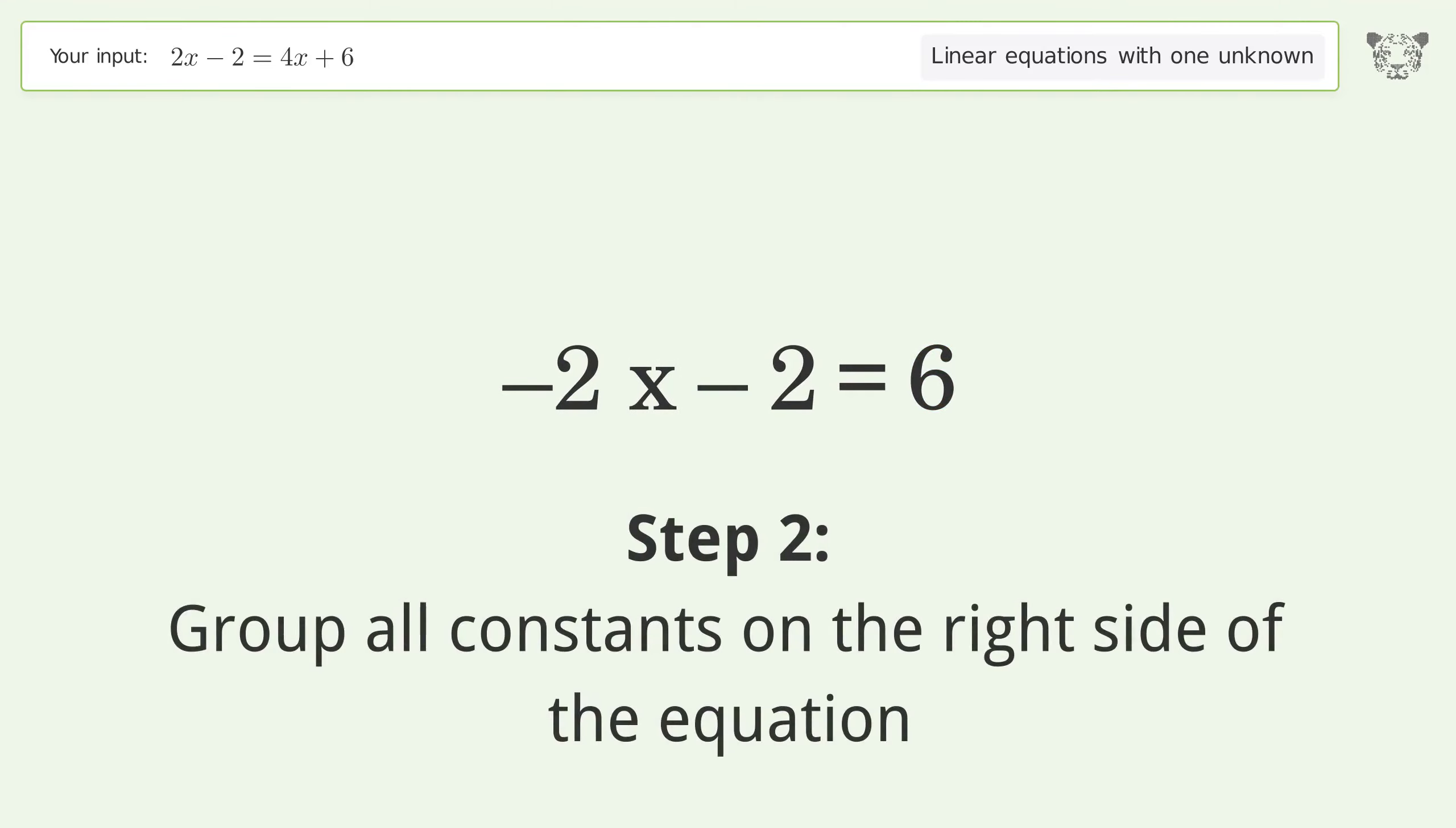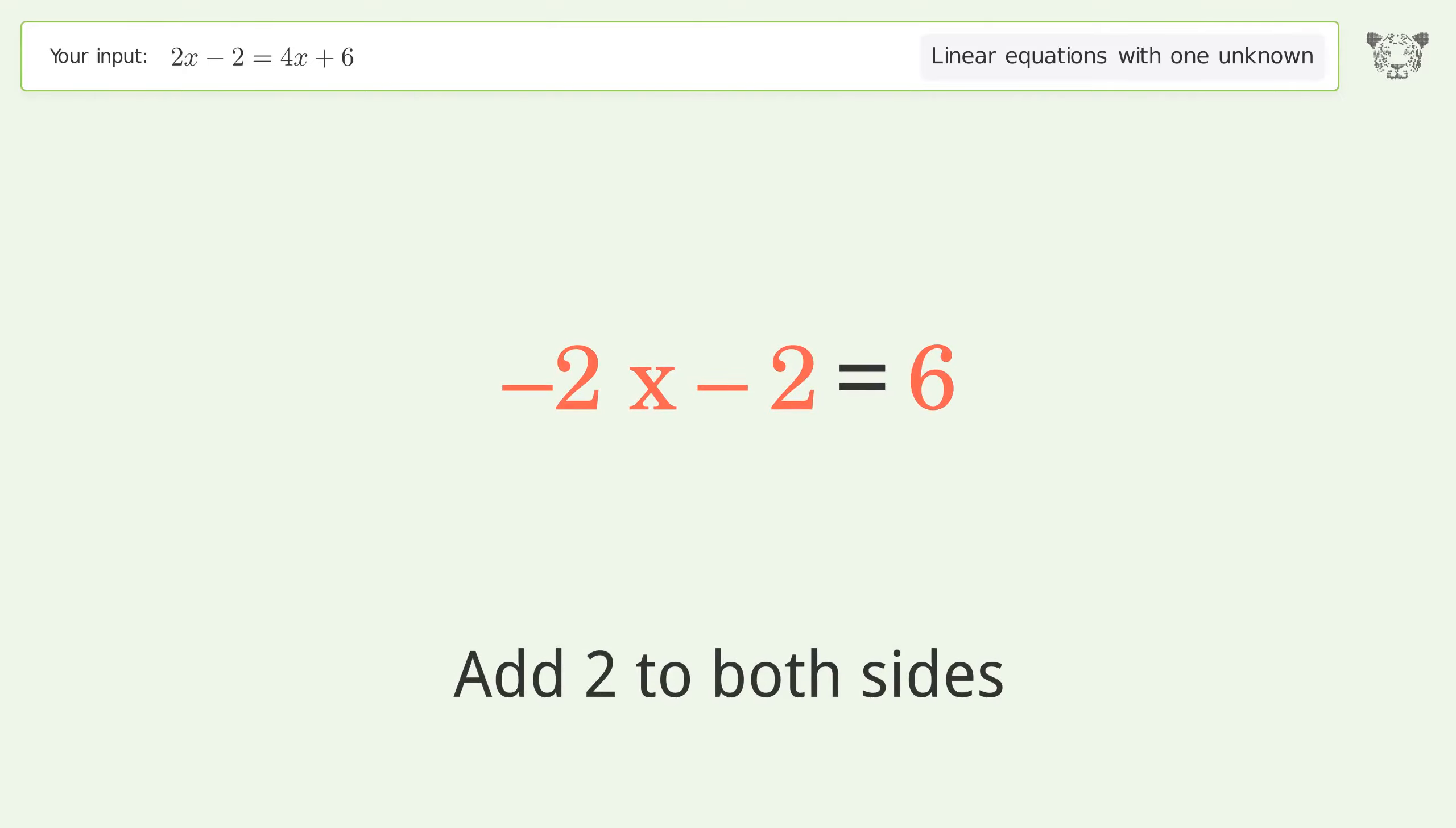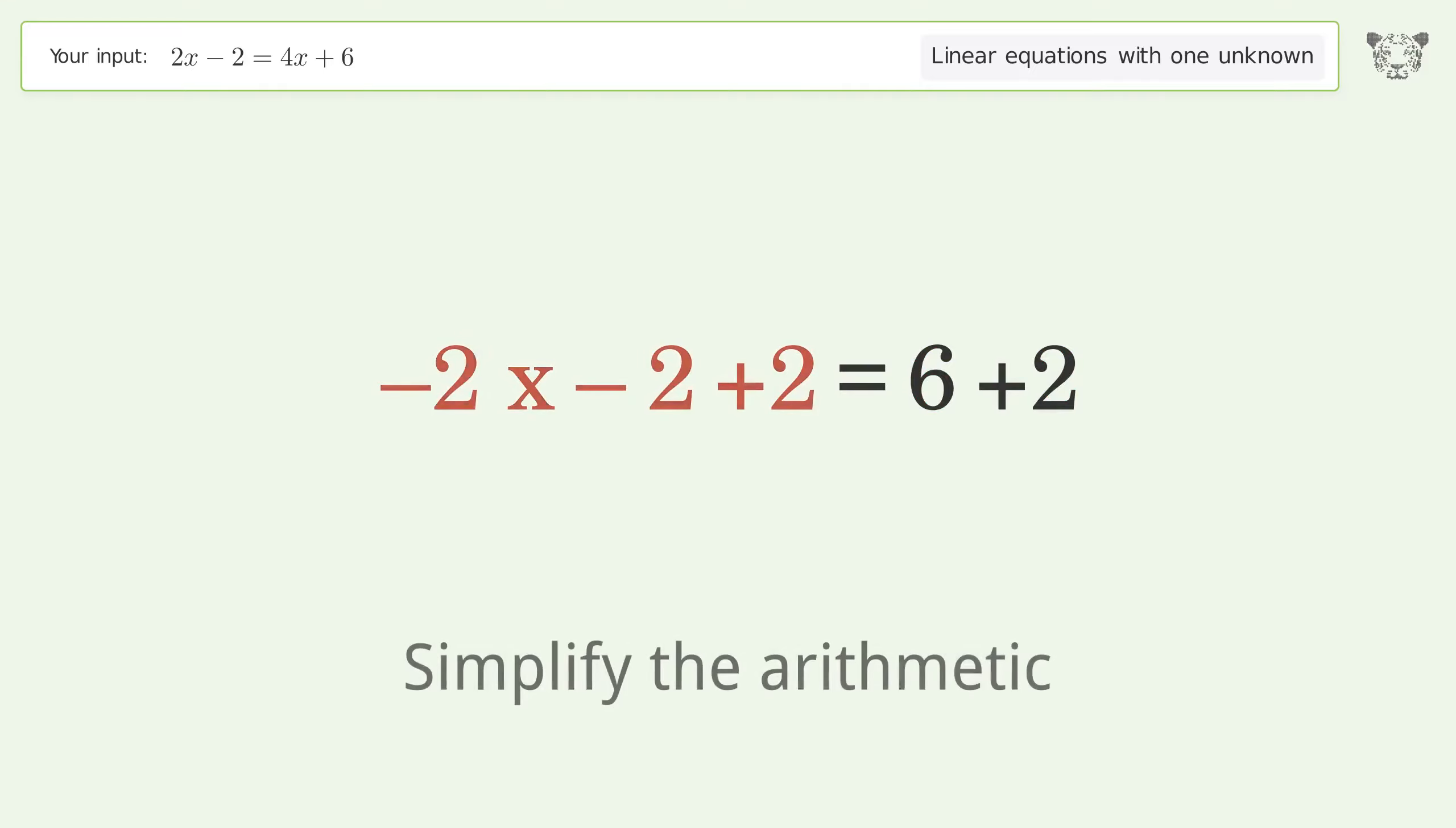Group all constants on the right side of the equation. Add 2 to both sides. Simplify the arithmetic.